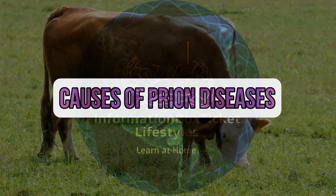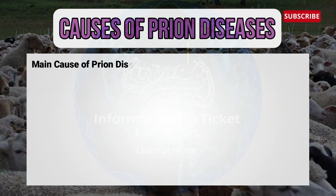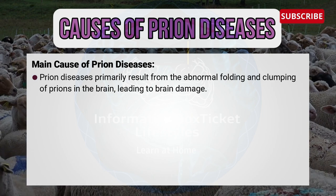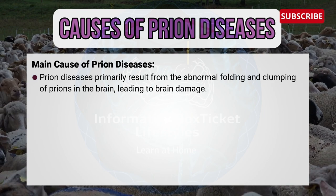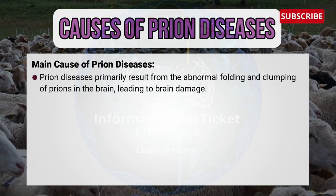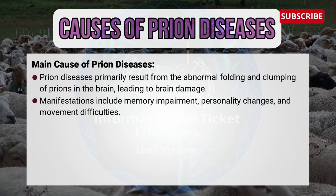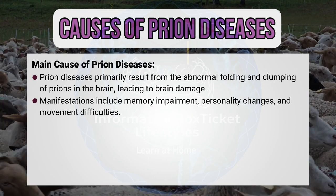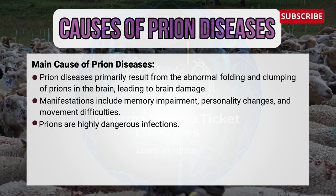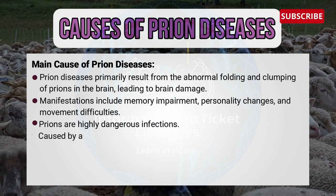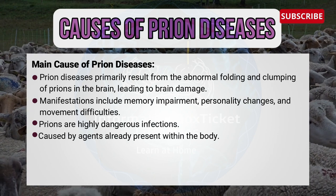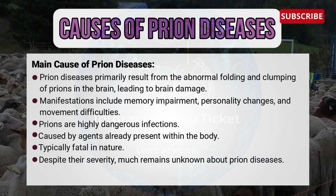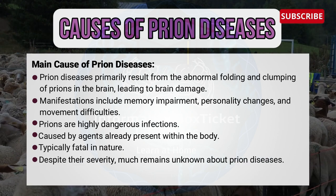Causes of prion diseases: Prion diseases primarily result from the abnormal folding and clumping of prions in the brain, leading to brain damage. Manifestations include memory impairment, personality changes, and movement difficulties. Prions are highly dangerous infectious agents already present within the body and are typically fatal in nature. Despite their severity, much remains unknown about prion diseases.